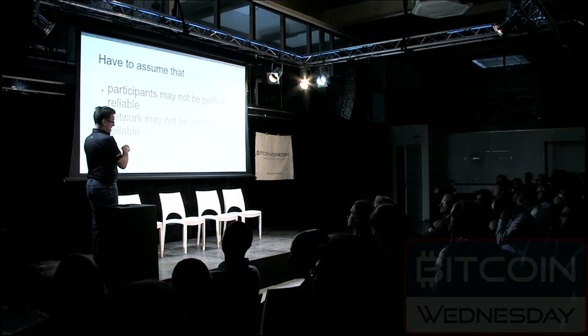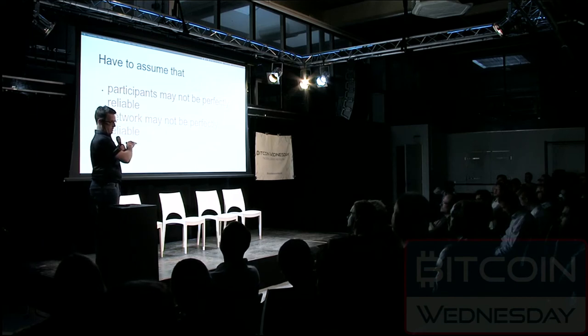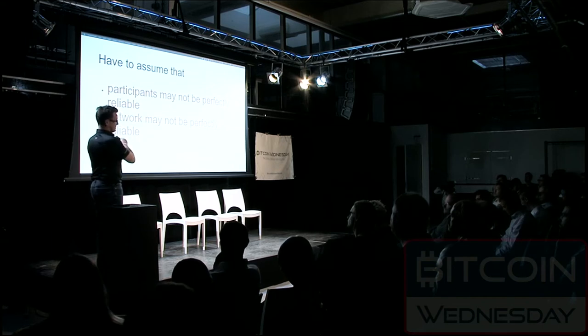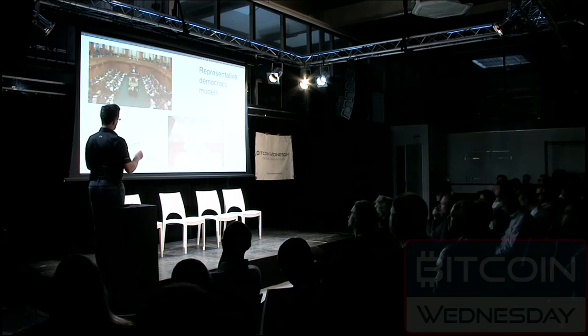We want to come to consensus on when things happen without a trusted third party, and do so in the presence of faults — both network faults where some messages may not get through due to network delay or malicious actors, and messages that might get through but have been intentionally corrupted. If we can come to consensus on the ordering and timing of transactions even in the presence of these sorts of faults, then we're doing well.